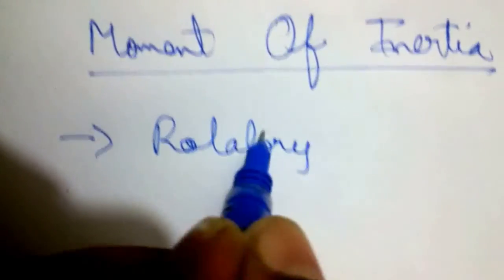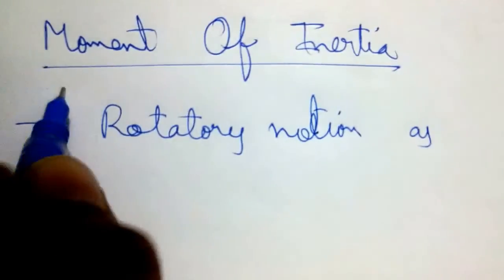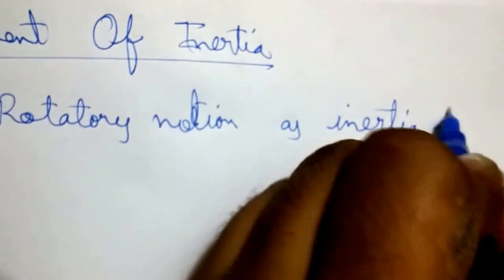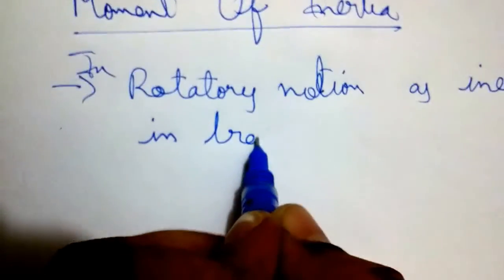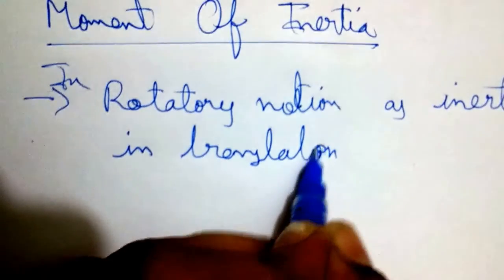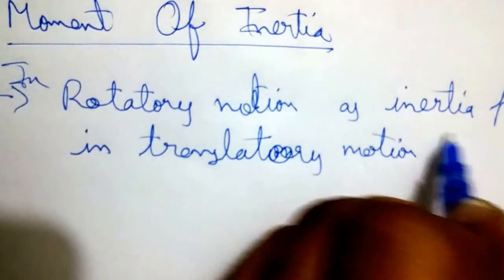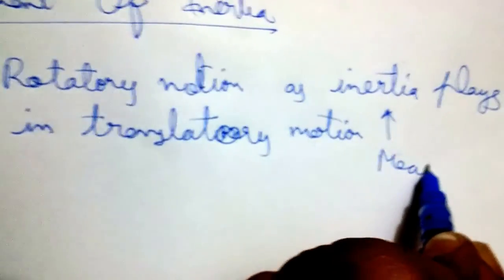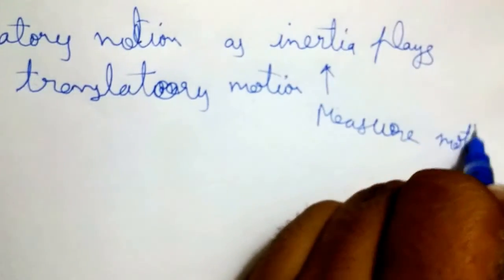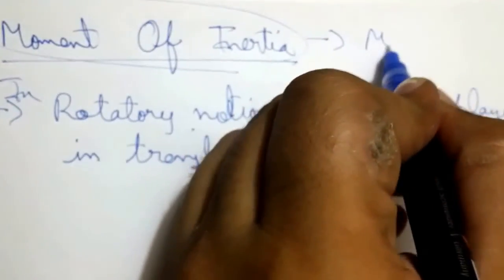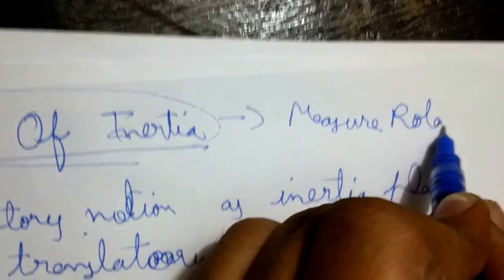In this lecture we will discuss moment of inertia. Moment of inertia plays the same role in rotatory motion as inertia plays in translatory motion. Inertia is the measure of translatory motion contained in a body; similarly, moment of inertia is the measure of rotational motion contained in a body.